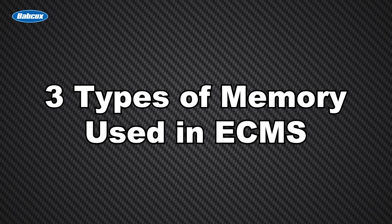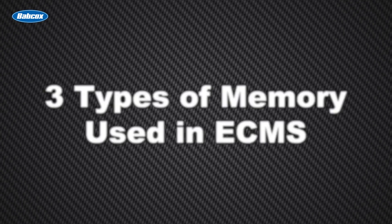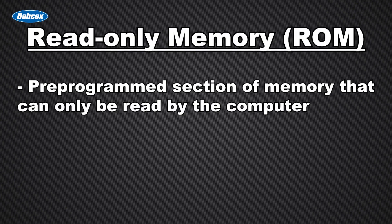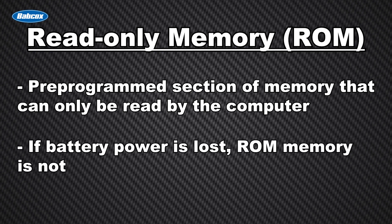There are three types of memory used in ECMs. Read-only memory, or ROM, is a pre-programmed section of memory that can only be read by the computer. If the battery power is lost, ROM memory is not lost and is retained.